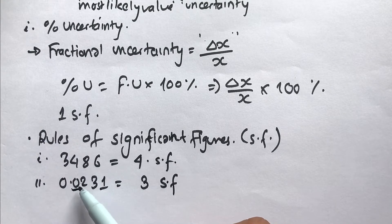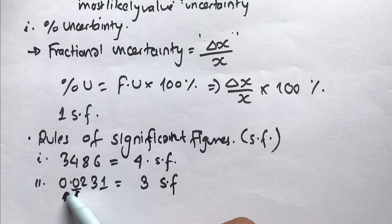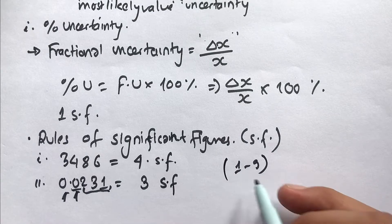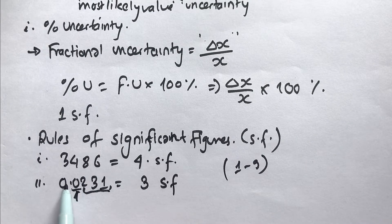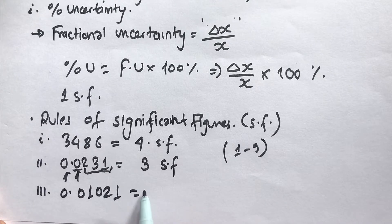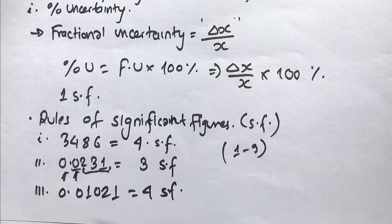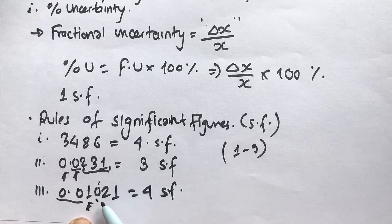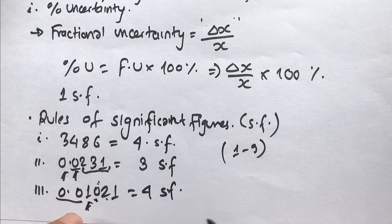The starting zeros in a number are not significant. If I have 0.01021, that number has four significant figures. The initial zeros are insignificant, but zeros in between other non-zero numbers are significant — so this zero is also significant, and the 2 and 1 are significant.